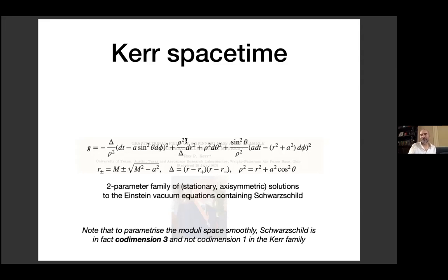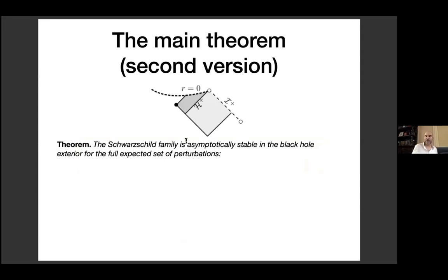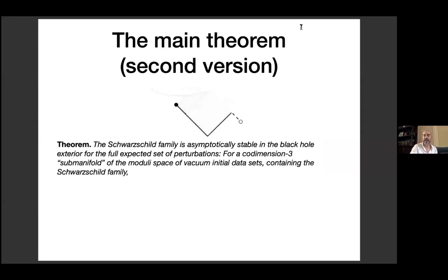Given the presence of the Kerr family, we cannot have asymptotic stability of Schwarzschild without conditions, because nothing prevents you from perturbing into this stationary family, and those solutions will never settle down to Schwarzschild. The second version of the theorem says: the Schwarzschild family is asymptotically stable in the black hole exterior without symmetry, for a codimension-three submanifold of the moduli space of vacuum initial data.